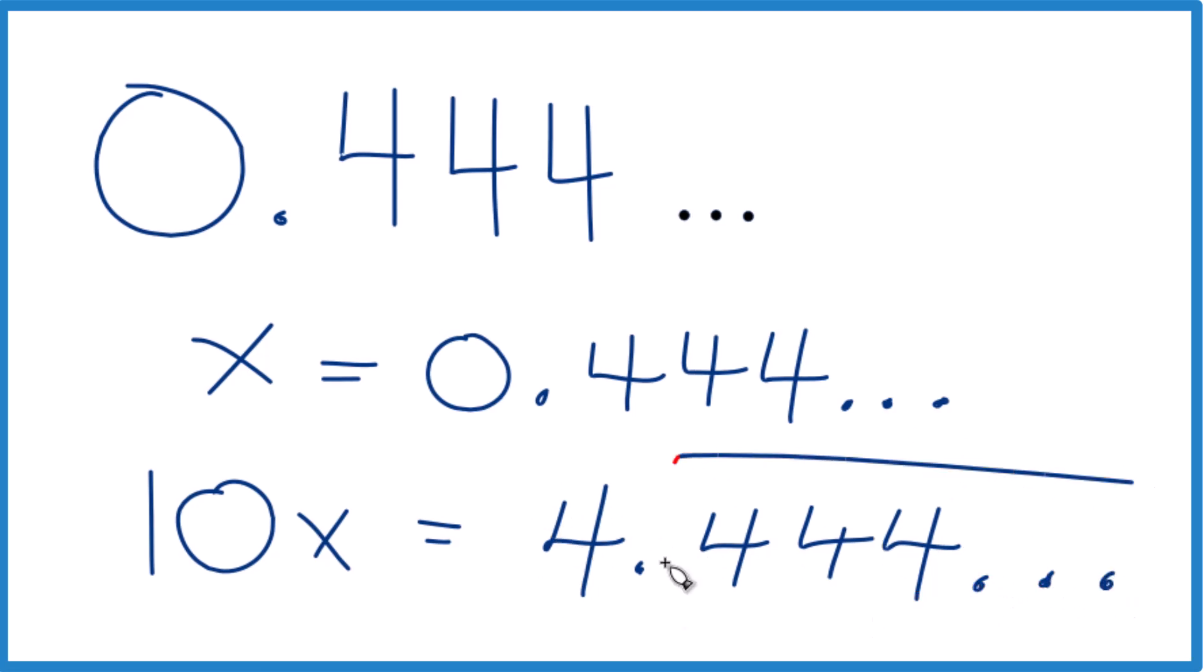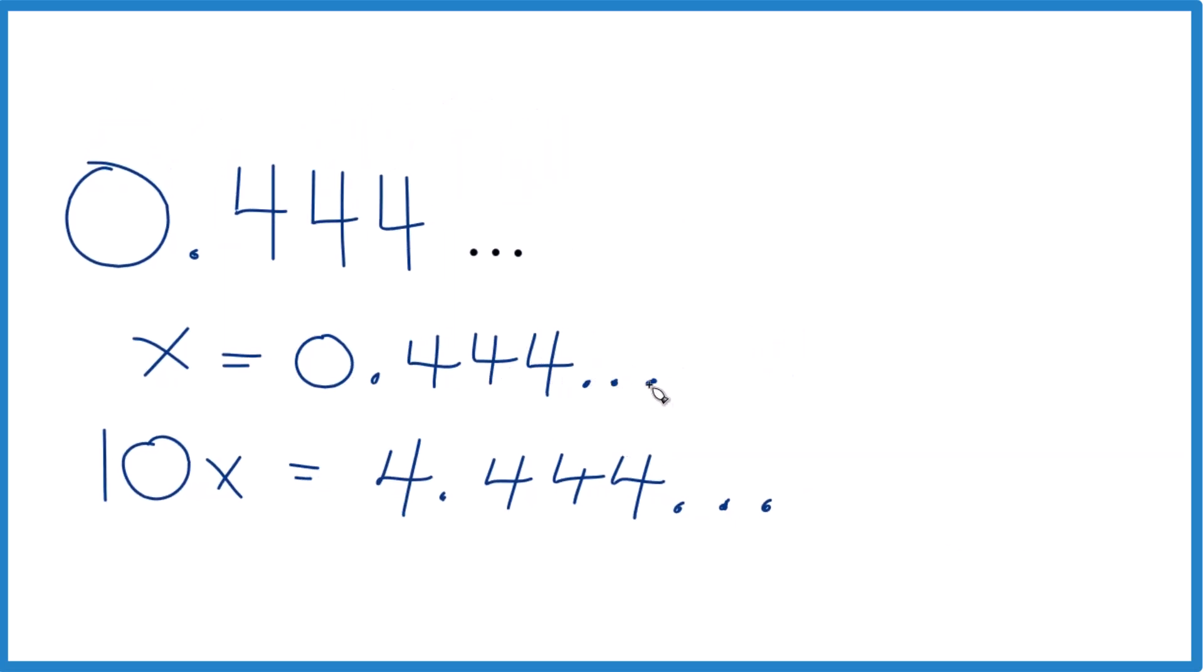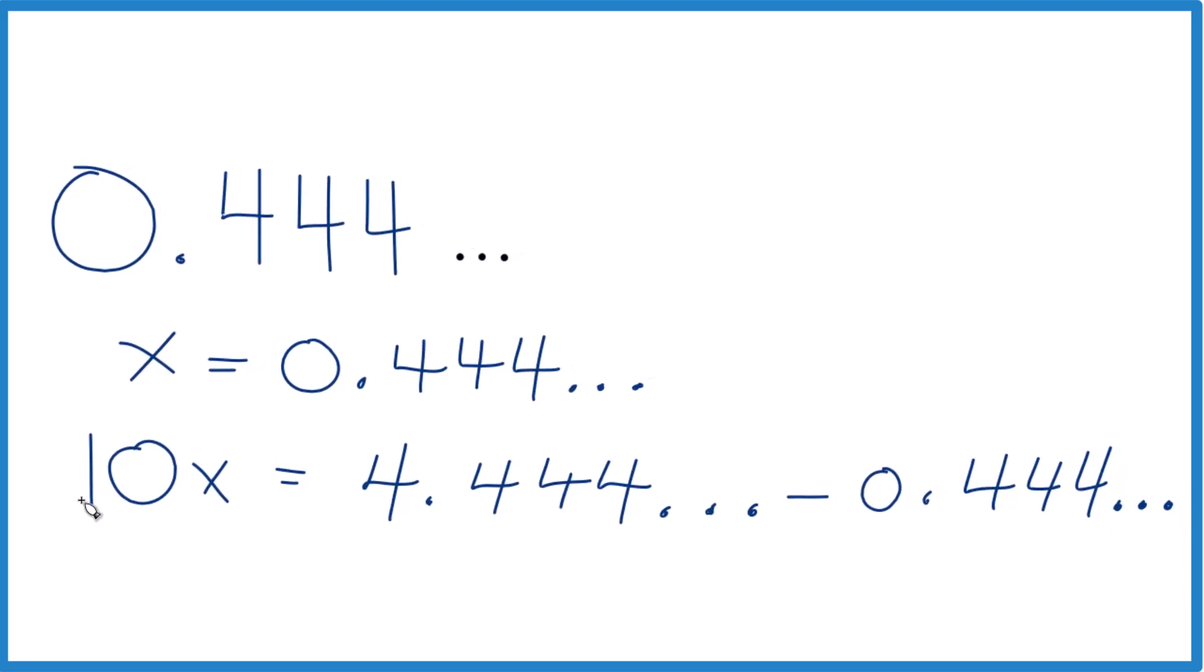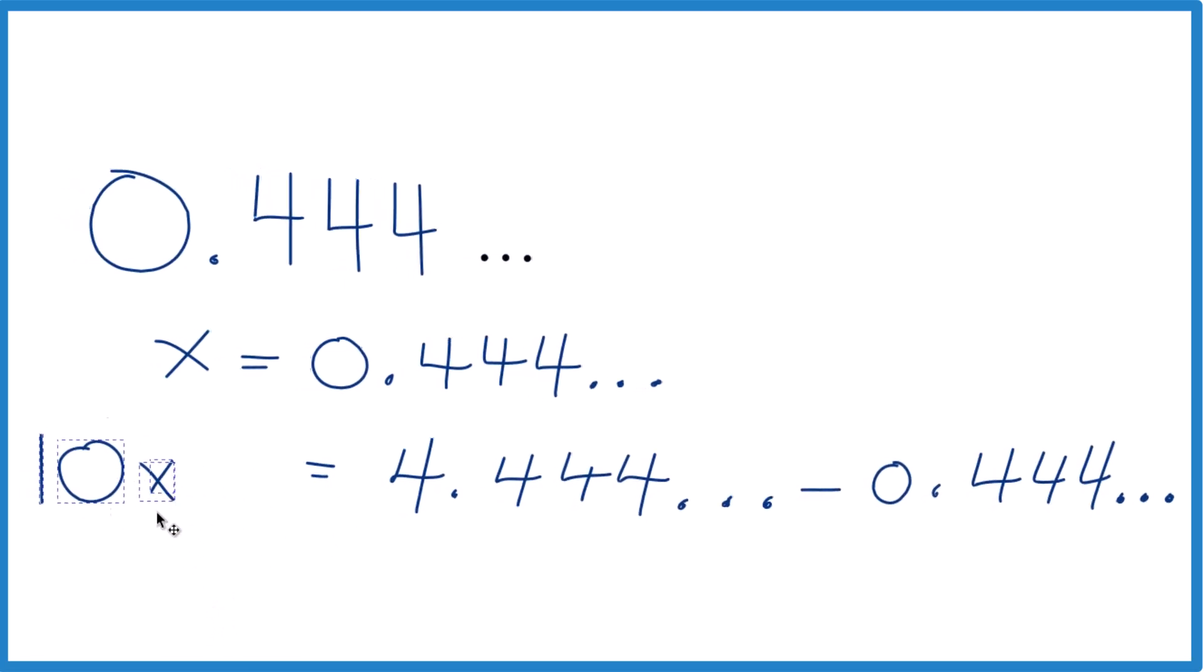And if we could just get rid of this here, we'd have whole numbers, everything would be easy. Here's how you do it. We know that x equals 0.444 repeating, so let's just subtract 0.444 repeating here from this side. And then we'll do the same thing over here. But since this is equal to x, we could just do 10x minus x and that'd be a lot easier to deal with. Let's do that.